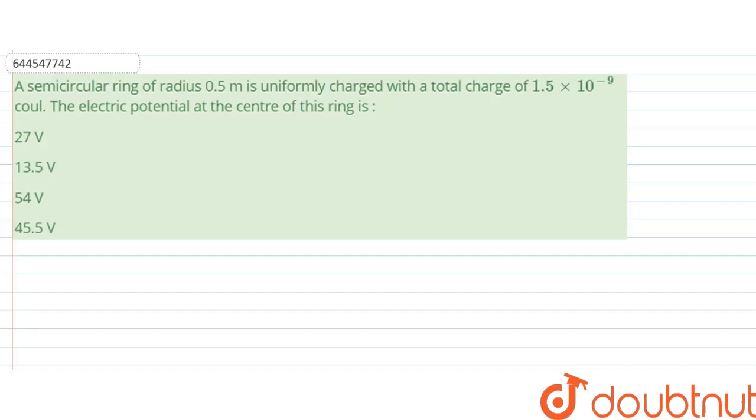Hello, we are given a question. A semicircular ring of radius 0.5 meter is uniformly charged with a total charge of 1.5 × 10^-9 coulomb. The electric potential at the center of the ring would be what?